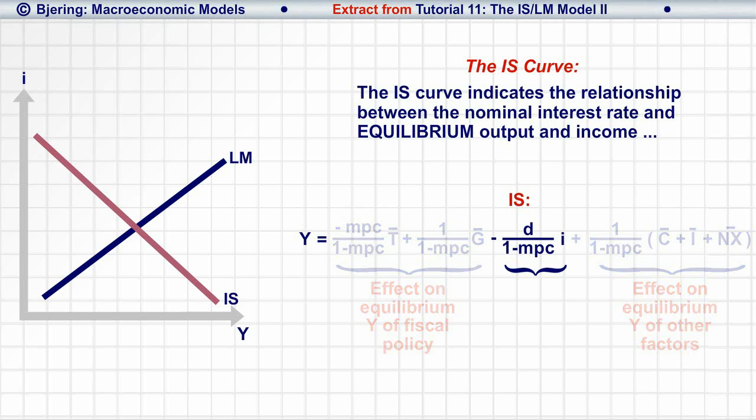While this term indicates the relationship between the nominal interest rate and equilibrium output and income, and thus, the impact of monetary policy on equilibrium Y.